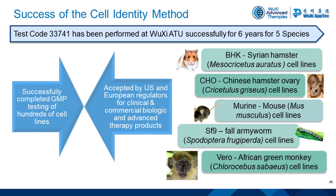In addition to the CHO cell line identity assay, we have developed similar assays for identity of BHK, Syrian hamster, mouse (Mus musculus), SF9 fall armyworm, and Vero African green monkey cell lines. Since putting this method online six years ago, we have successfully completed GMP testing of hundreds of cell lines. The test has been accepted by U.S. and European regulators for clinical and commercial biologic and advanced therapy products.